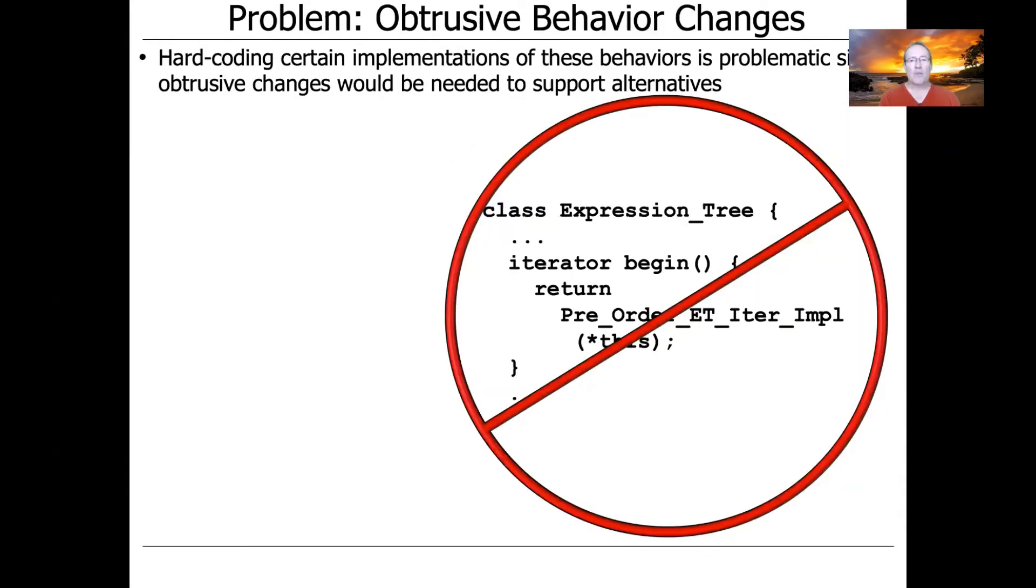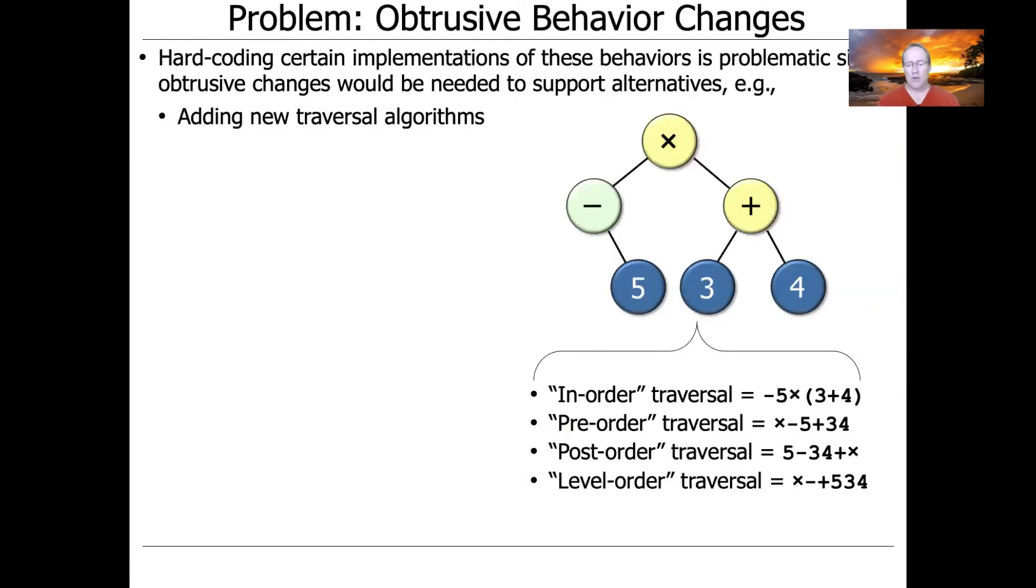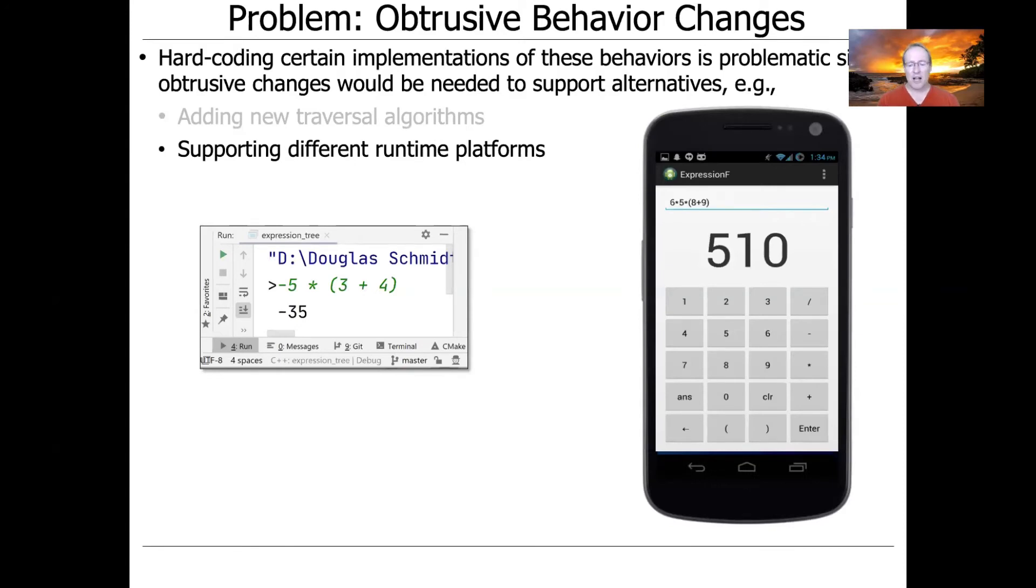So how can we implement our code to be transparent to change? Well, first, it's worthwhile talking about what would be an example that would not be transparent to change. And one example would be to hard code our implementations to only do one thing. So here's an example where we might have our expression tree have a begin factory method that always returns pre-order expression tree iterator impulse. And that's certainly possible, but now we're stuck with that one and only way of doing things. So adding new traversal algorithms would be very hard with that one interface. And supporting different runtime platforms could also be hard if that was important for our use case as well.